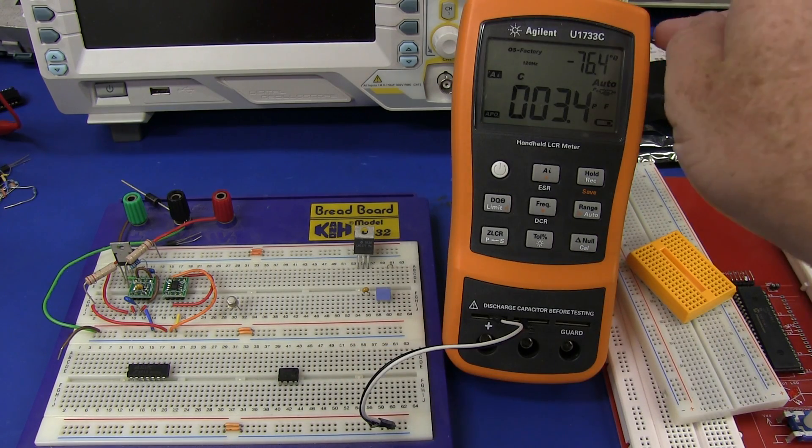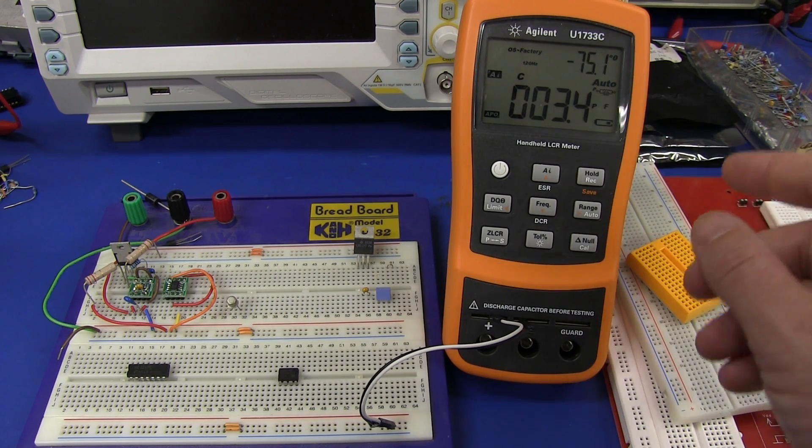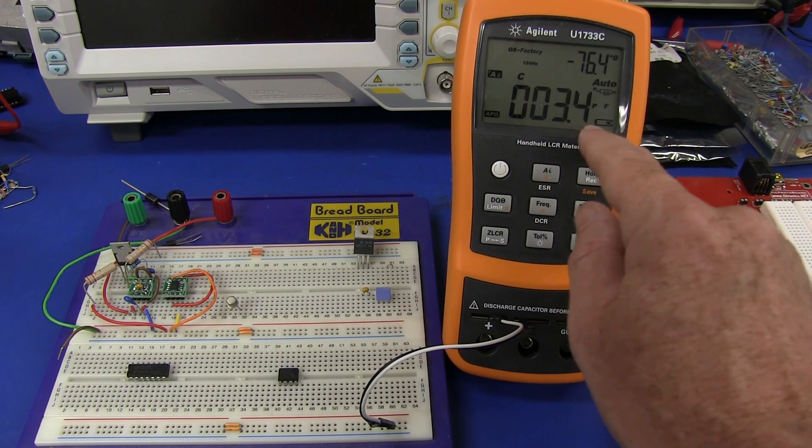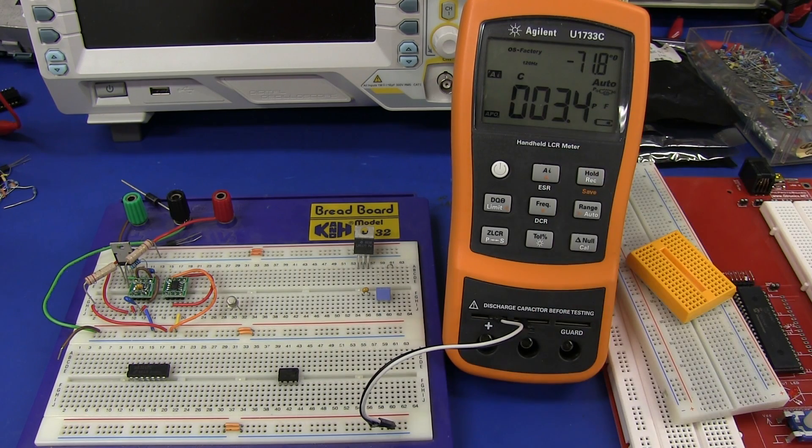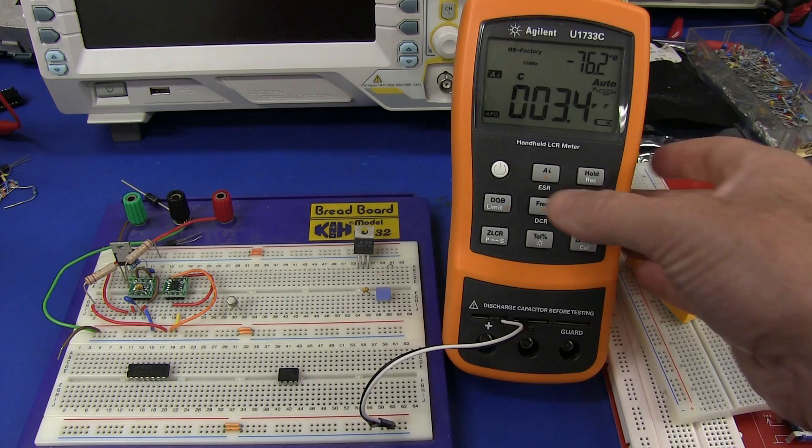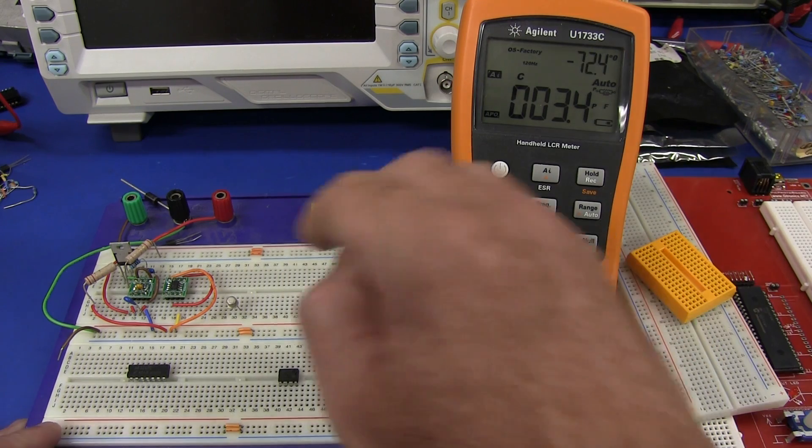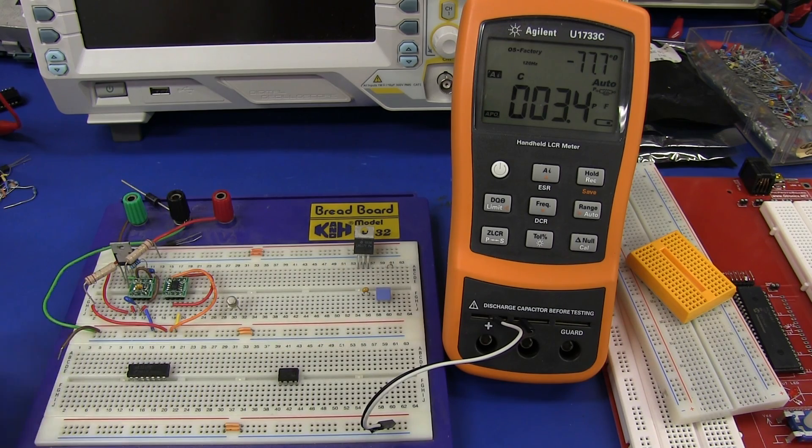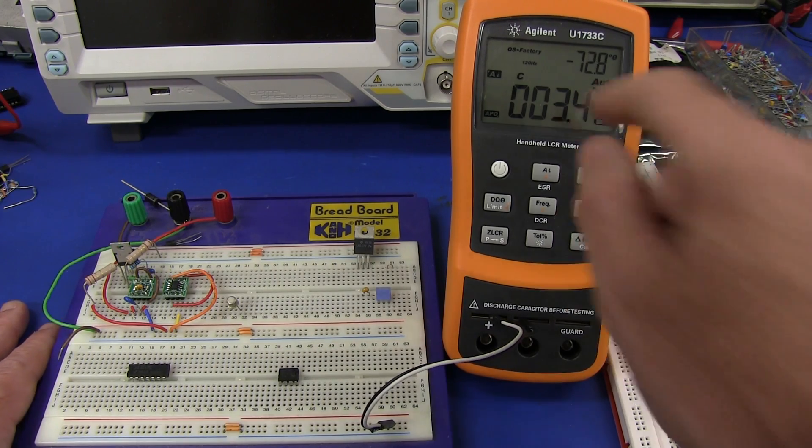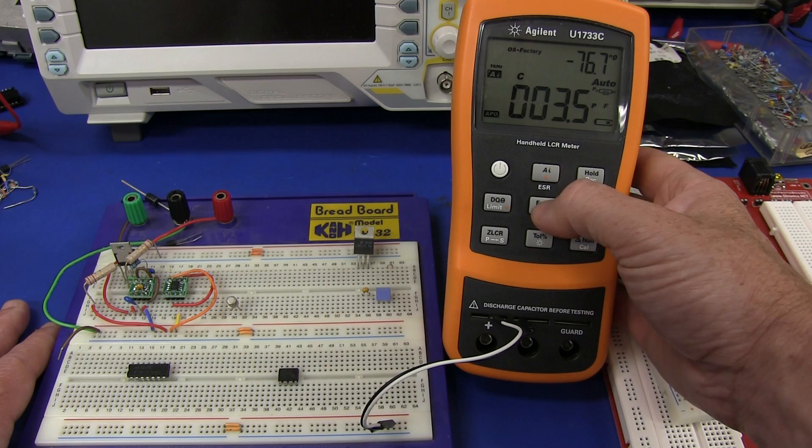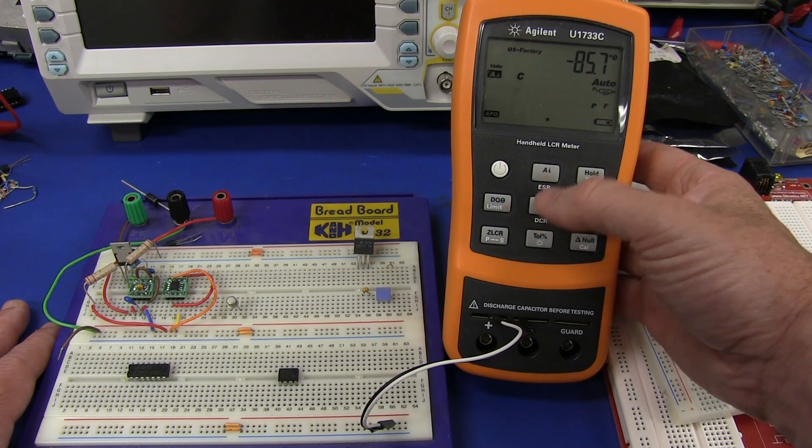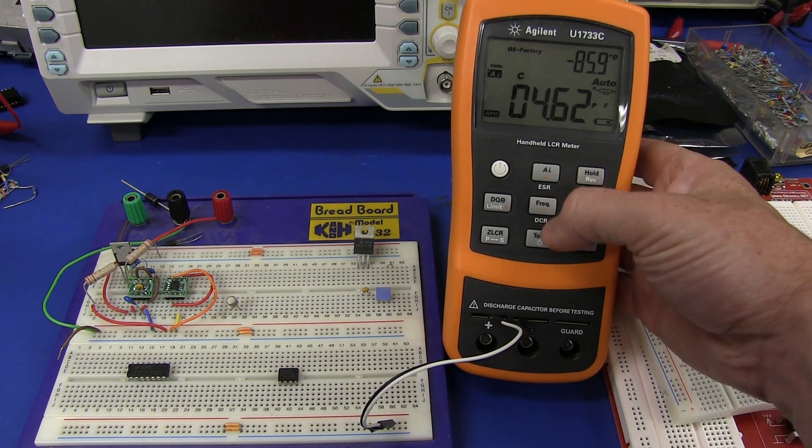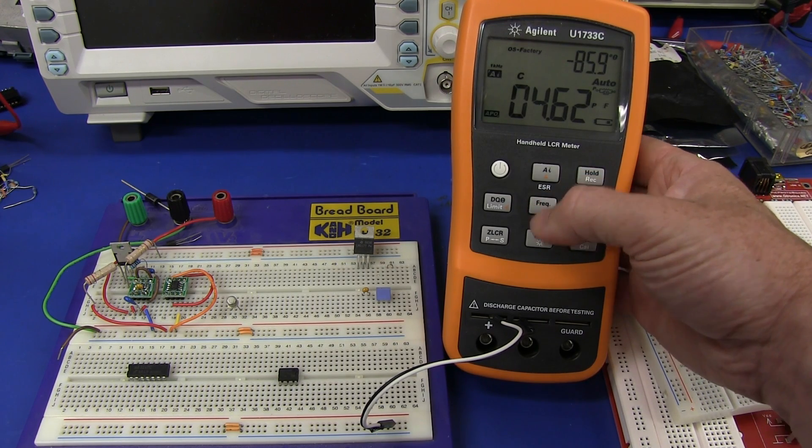So I've got my Agilent U1733C LCR meter here. And, well, down at 120 hertz it's only got 0.1 picofarads resolution there. But if we go up in frequency, which is what we're going to have to do on this breadboard because the capacitance will change with frequency, of course, it's not going to be fixed. But this puppy, if we go up in frequency, 1 kilohertz, bingo, we get an extra digit. We're down to 10 femtofarads there. Awesome!